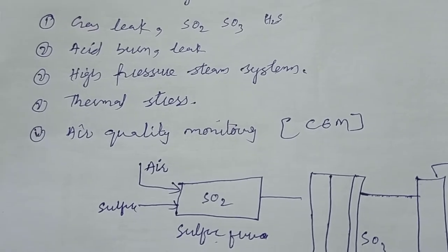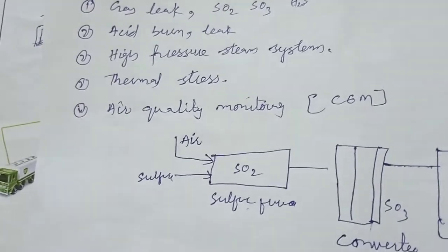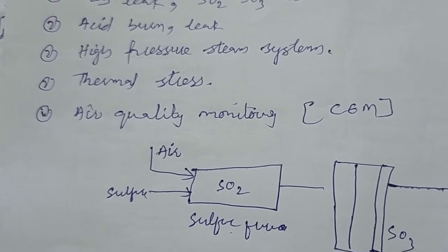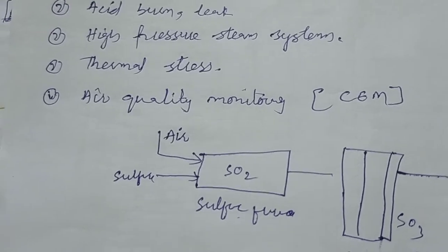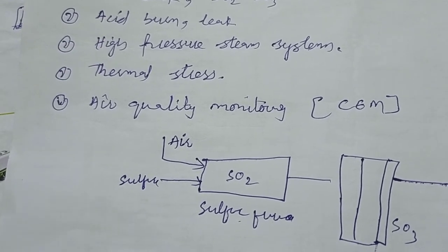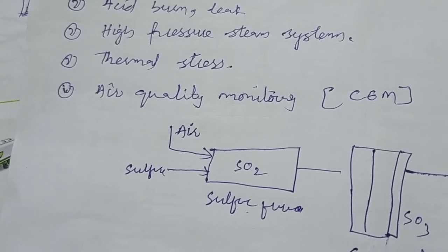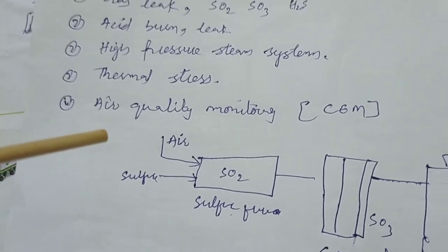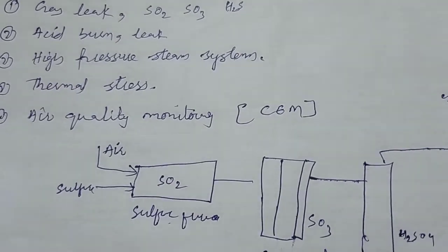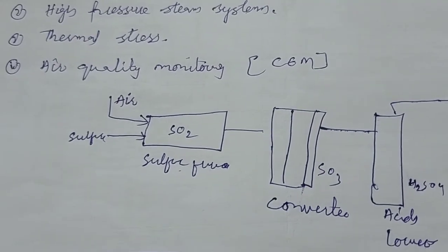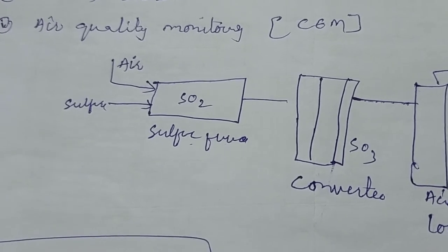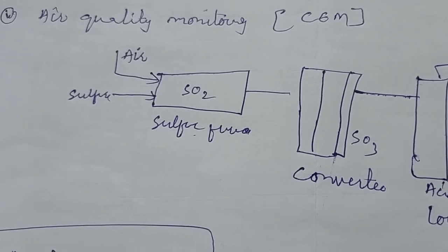The third hazard is high-pressure systems. As I explained in another video, a large amount of heat is generated and we utilize that heat to produce steam, so it's a high-pressure system. We use PSV and PRV to control pressure in case a tank gets too pressurized. Fourth is thermal stress — the furnace and all converters are maintained above 1000 degrees, so there is significant thermal stress. Last is air quality monitoring: we maintain air quality with an air analyzer, checking that SO2 and SO3 going to the environment are within limits such as 10 ppm.